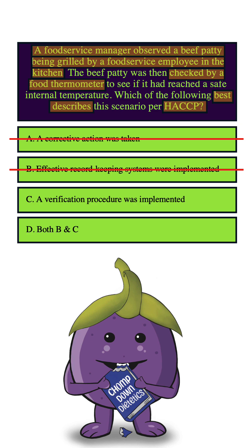C would be the answer that we should pocket. Let's move on to D just to be sure, which states both B and C. We can eliminate this because we already eliminated B — it can't be this answer since it includes B — leaving us with C, which is indeed the correct answer.